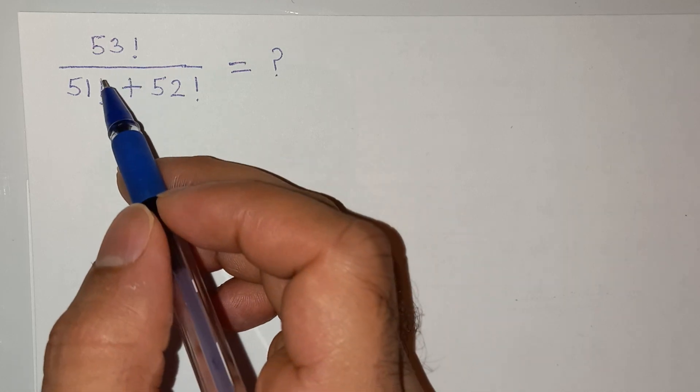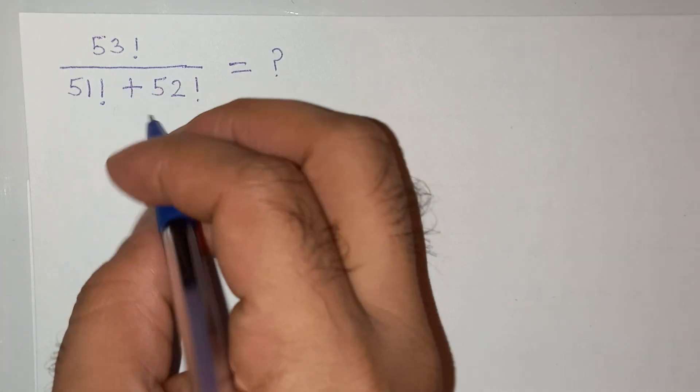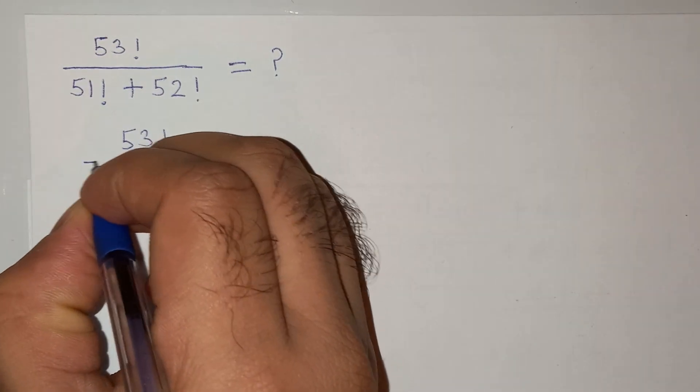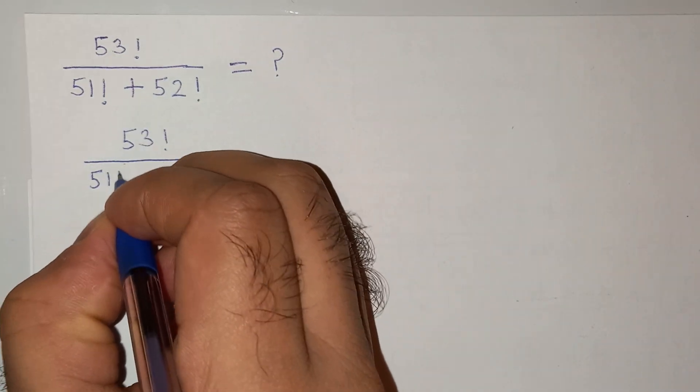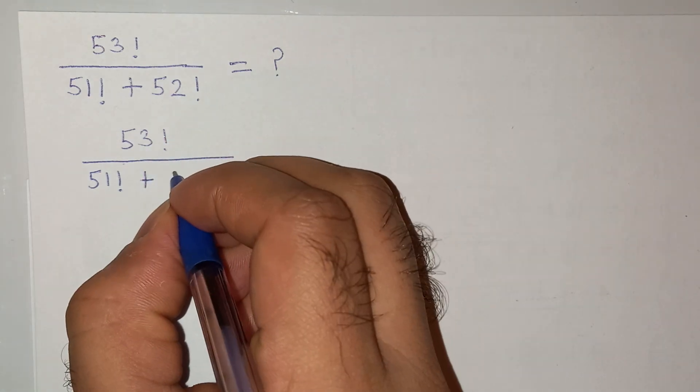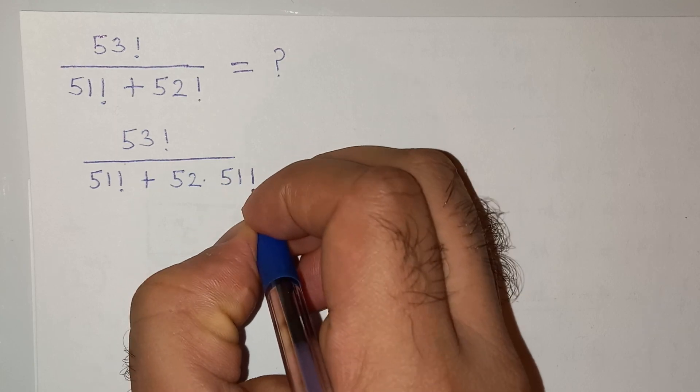I think this is an easy question, but let me know in the comment section if you find it. So we can write this as 53 factorial divided by 51 factorial plus, now the 52 factorial can be written as 52 multiplied by 51 factorial.